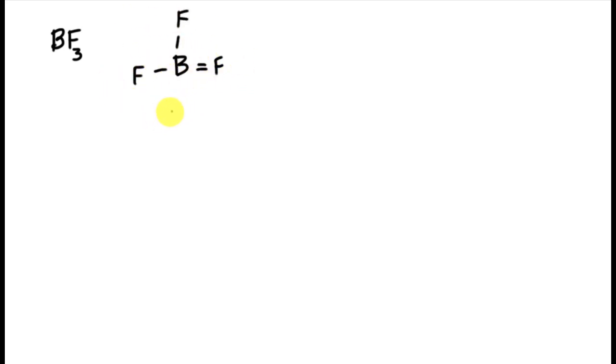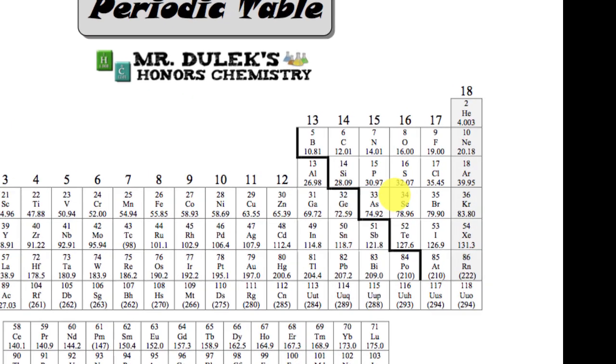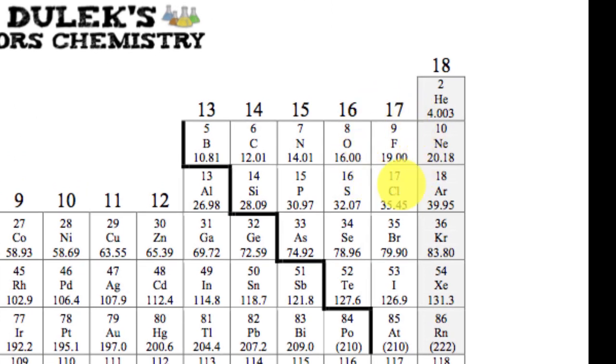Okay, if we think about the periodic table and where fluorine is on the periodic table in relation to boron. So now I've got my periodic table. So if I look at fluorine here, fluorine is on the right side of the table. It has a higher electronegativity than boron. Boron is way over on the other side.